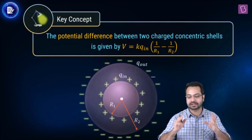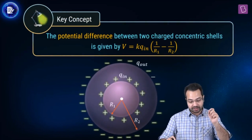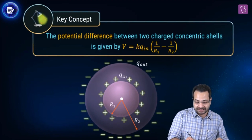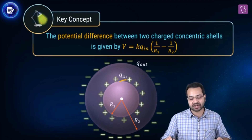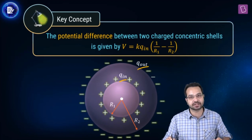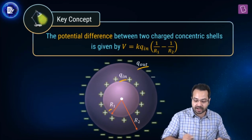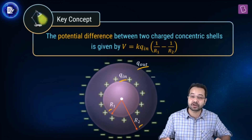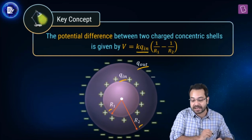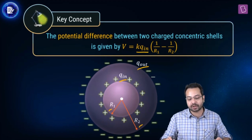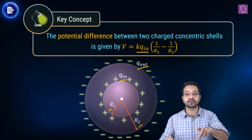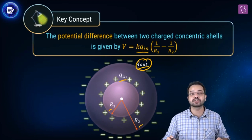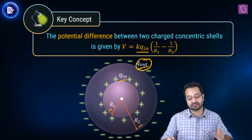Let's understand the key concept involved here. If we have concentric conducting spheres, then on the inner sphere the charge is Q_in and on the outer sphere the charge is Q_out, and the radii are R1 and R2 respectively. The potential difference between the two spheres is given by K into Q_inside into (1/R1 minus 1/R2). The important thing to note is that the potential difference does not depend on the charge on the outer sphere.